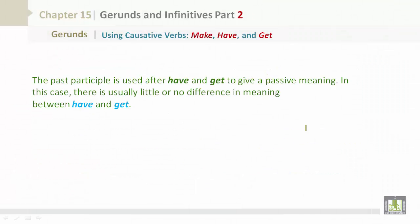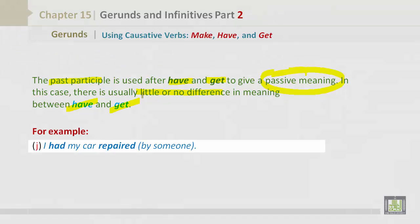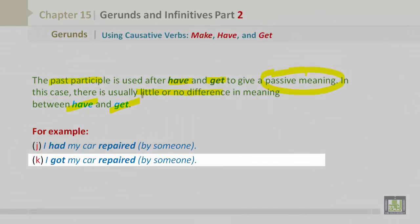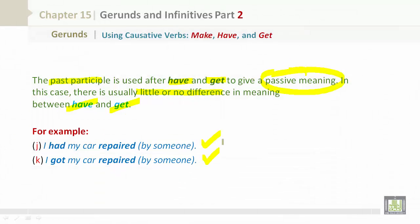The past participle is used after have and get to give a passive meaning. In this case, there is usually little or no difference in meaning between have and get. For example: I had my car repaired by someone. I got my car repaired by someone. There is little or no difference in meaning between both examples.